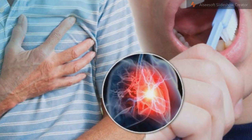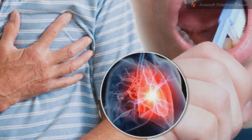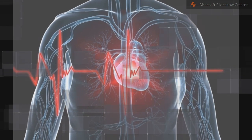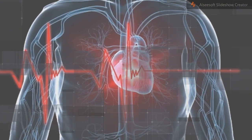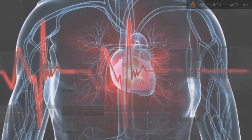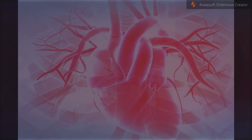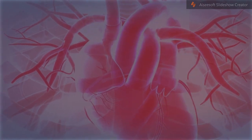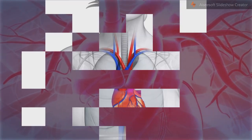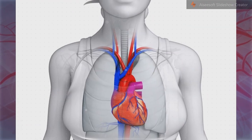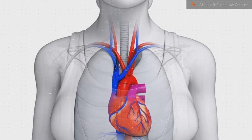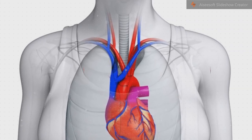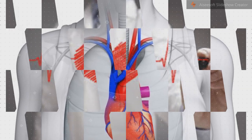Criteria for MI diagnosis include: symptoms relating to ischemia; changes on an electrocardiogram (ECG) such as ST segment changes, new left bundle branch block, or Q waves; changes in the motion of the heart wall on imaging; and demonstration of a thrombus on angiogram or at autopsy.